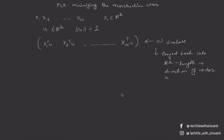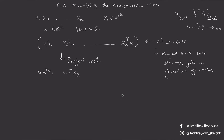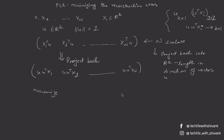The reconstruction error is the distance between the projected points and the original points. When we project back, we get vectors u times u^T x1, u times u^T x2, and so on. Note that u is k×1 and u^T xi is 1×1, so u times u^T xi is k×1. These are the projected points back in k-dimensional space, up to u times u^T xn. The distance between these projected points and the original xi should be minimized.